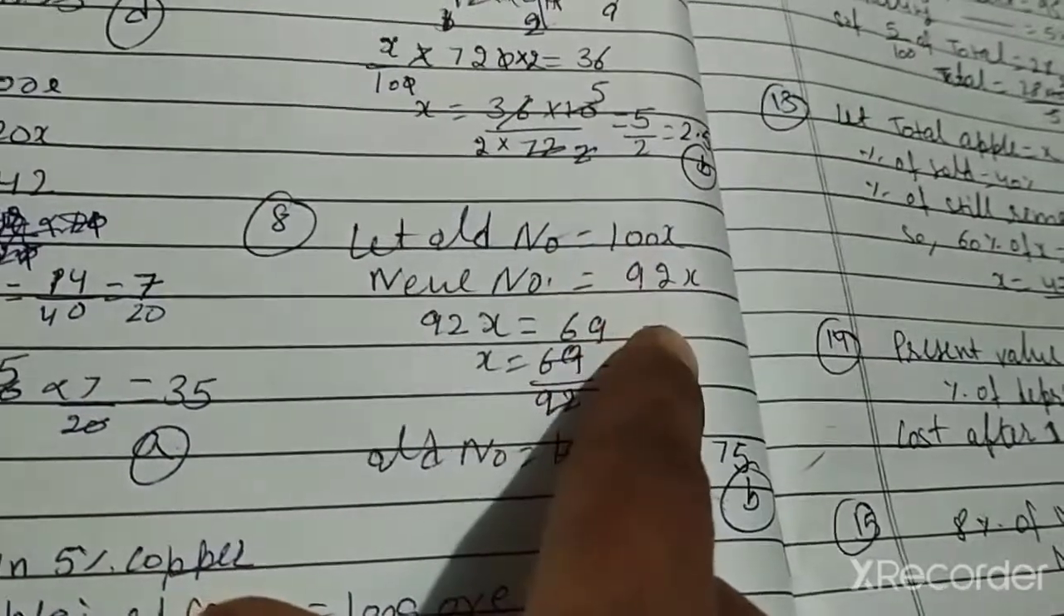The same, question number eight. Ek number ko 8% reduce kiya, so 100 minus 8 is 92. The new number is 69.